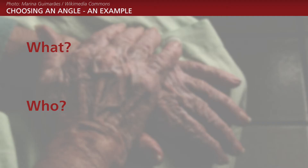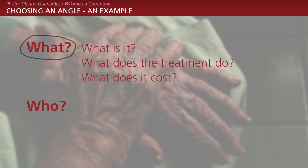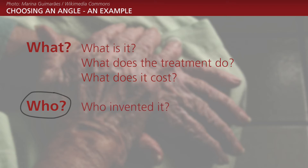Every story comes with an angle. But what is an angle? Well, if you want to write about, say, a new treatment against Alzheimer's disease, you can choose to focus on the what — what is it, what does the treatment do, and what does it cost? You can also choose an angle focusing on the who. Who invented it? Who is he or she? And if he or she is interesting enough, you can even write a Hollywood-style hero's journey about him or her.